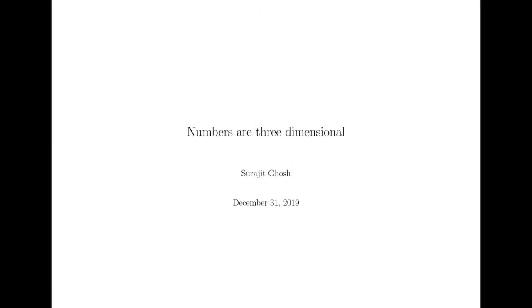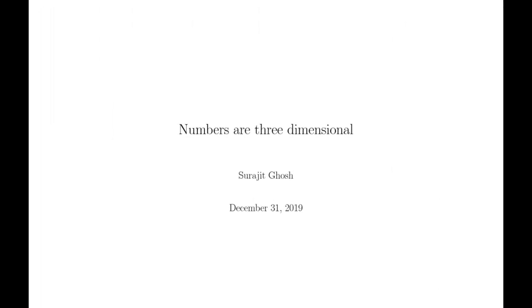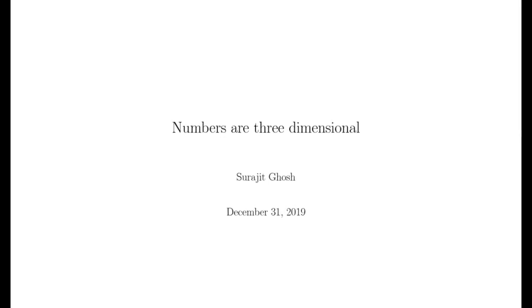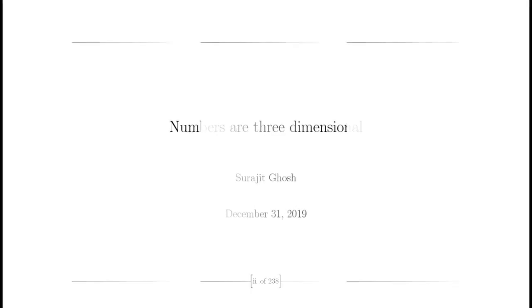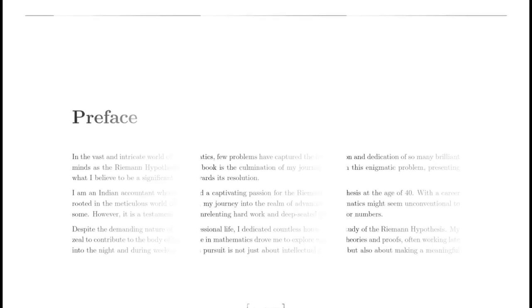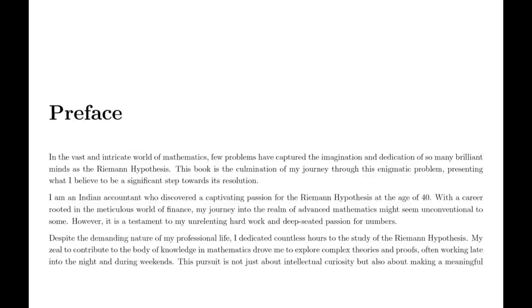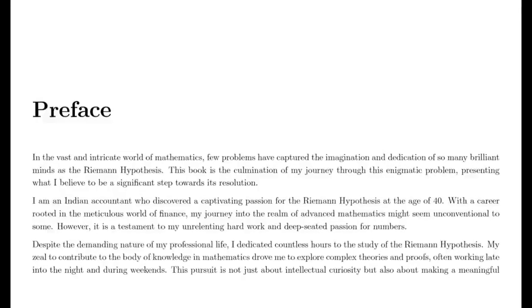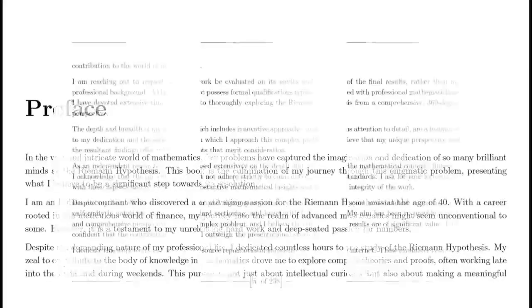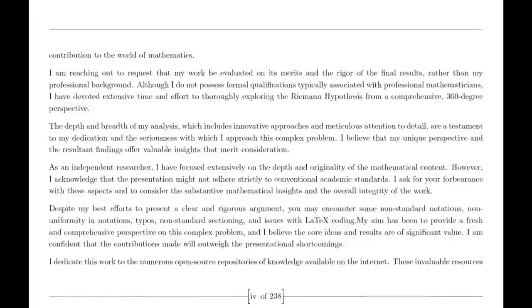Namaste. Once upon a time, in the heart of the 18th century, a brilliant mathematician named Leonard Euler ventured into the mysterious world of numbers. Euler was captivated by the idea of understanding the distribution of prime numbers, those elusive building blocks of arithmetic. In his exploration, he stumbled upon a peculiar series, the infinite sum of the reciprocals of the natural numbers raised to a power. This was the dawn of what would later be known as the Riemann zeta function.